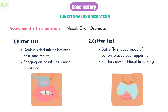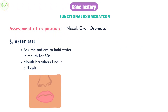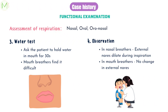The cotton test can also be used to determine unilateral nasal blockage. In the water test, the patient is asked to fill their mouth with water and retain it for a minimum of 30 seconds. Nasal breathers can accomplish this with ease, but oral breathers find it very difficult. By observation, in nasal breathers the external nares dilate during inspiration, while in mouth breathers there is either no change or they may constrict during inspiration.